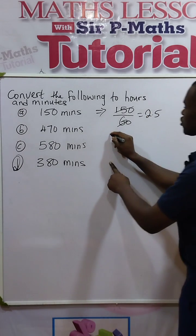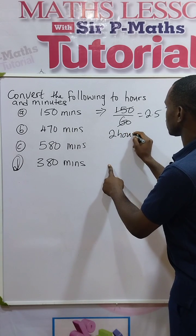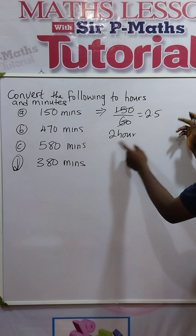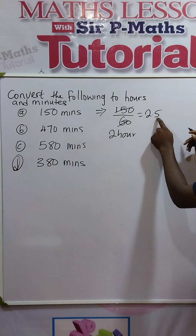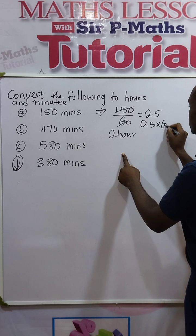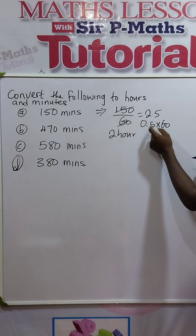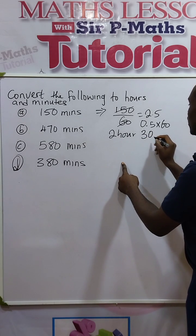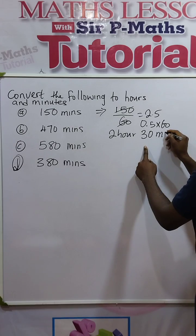Now the 2 is 2 hours. This 0.5 converts it to minutes. The 0.5 is not minutes. So to convert 0.5, you say 0.5 times 60. Multiply 0.5 by 60, you'll have 30. So we have 2 hours, 30 minutes.